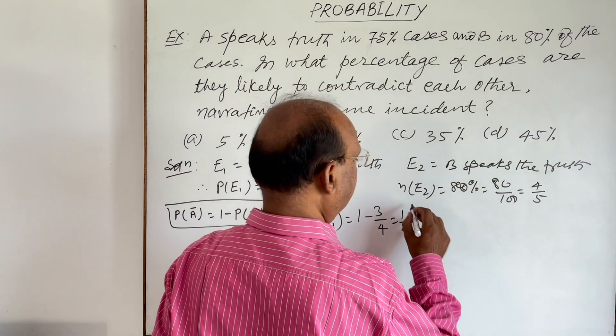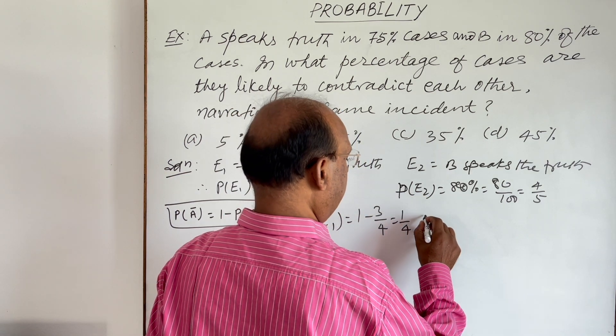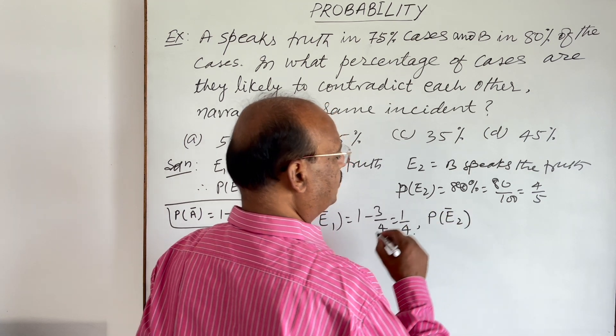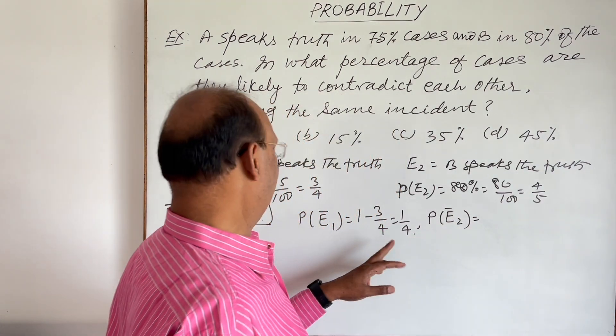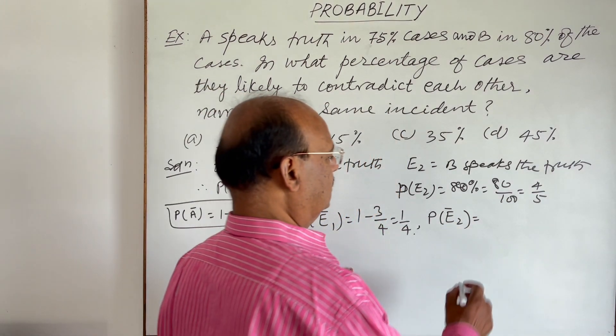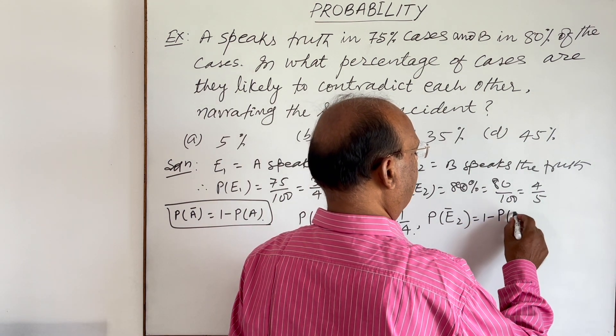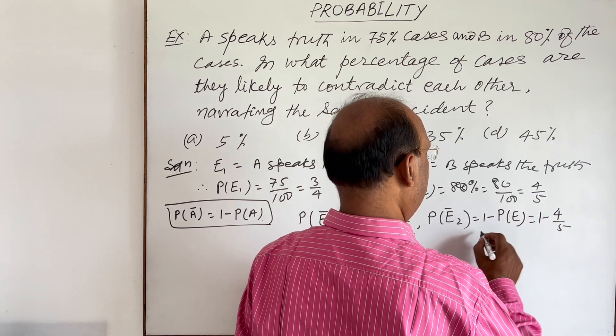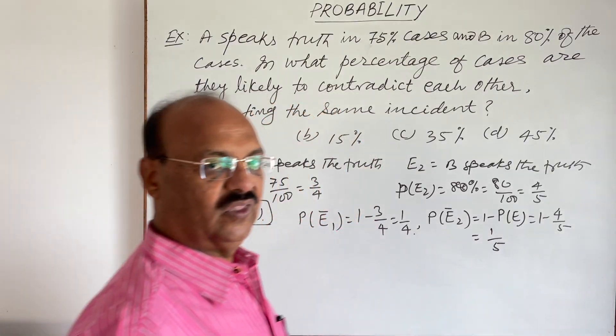Similarly, probability when B is not speaking truth, this is equal to 1 minus P(E₂), 1 minus 4 by 5, and this is equal to 1 by 5.